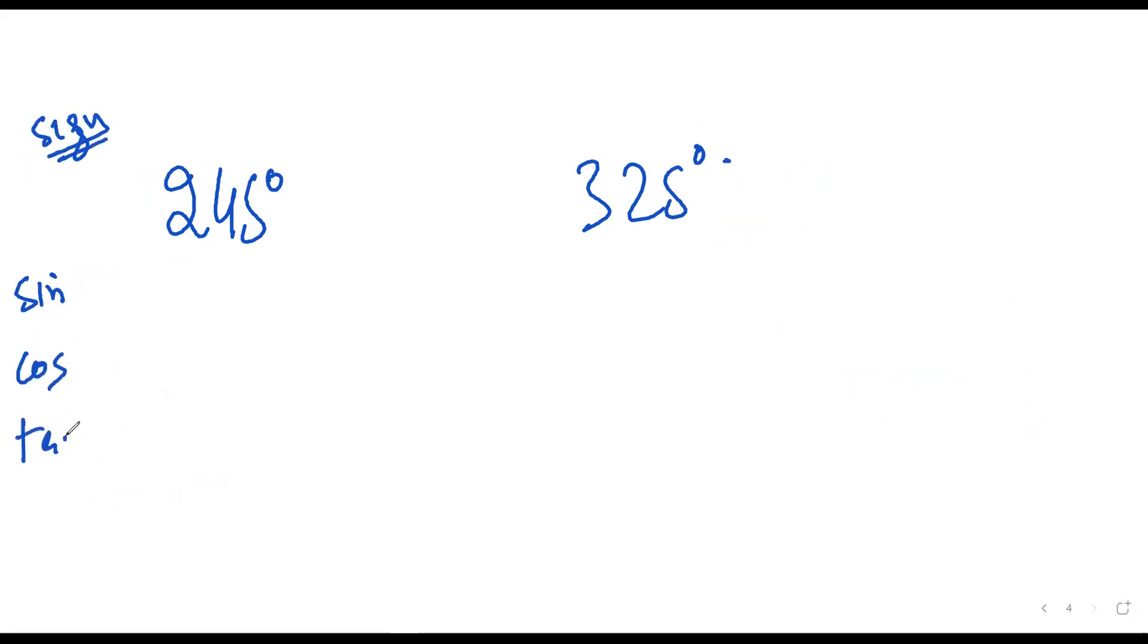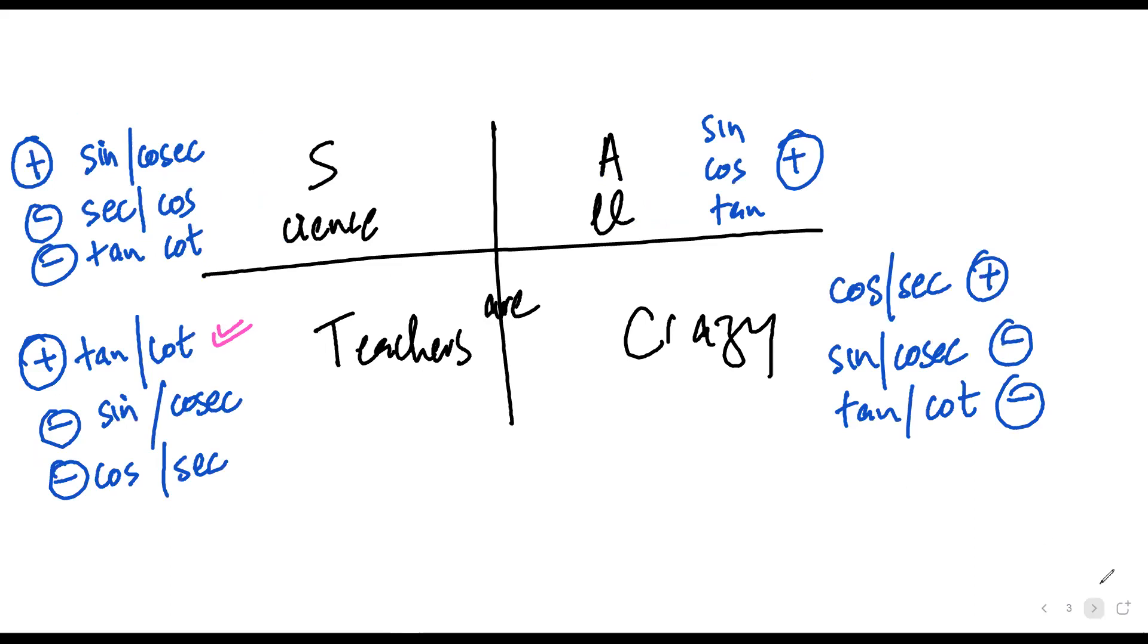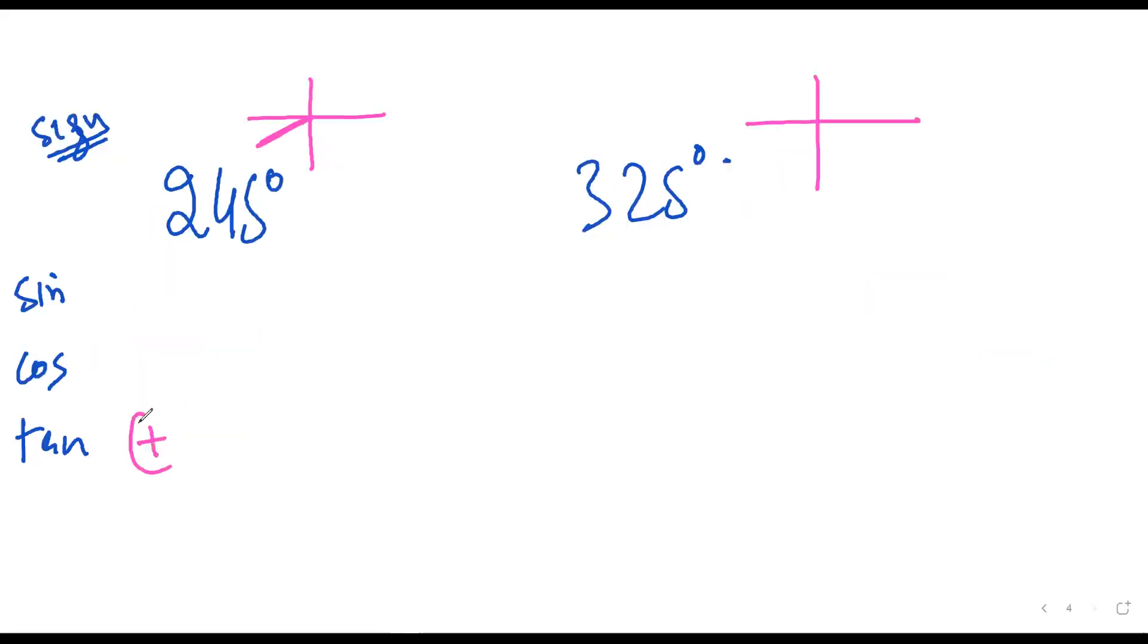All that you need to understand is in which quadrant is 245 degrees. 245 would be in the third quadrant. So in third quadrant, which is positive? Only tan is positive. So sin and cos would be negative.